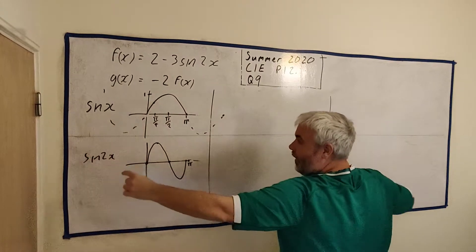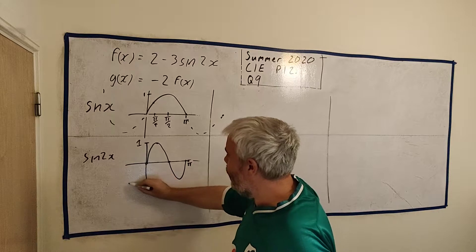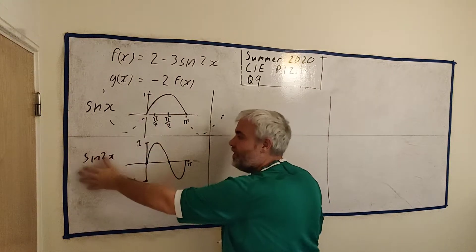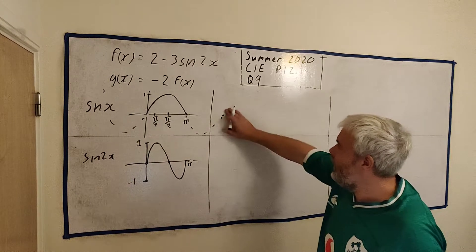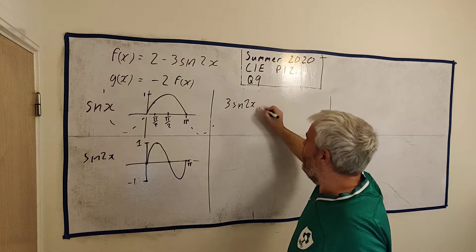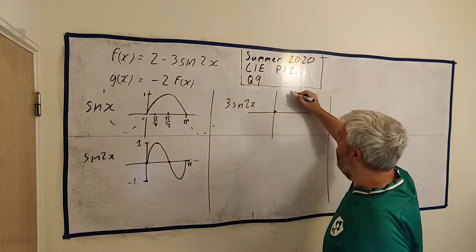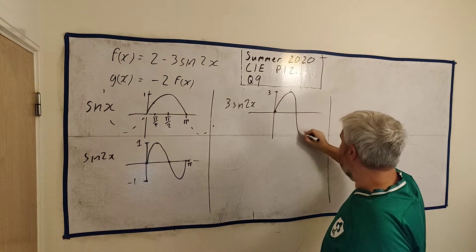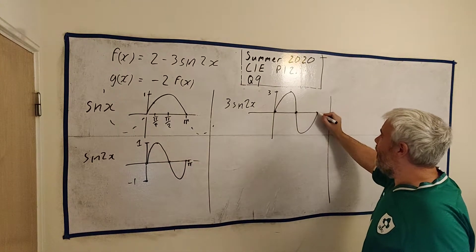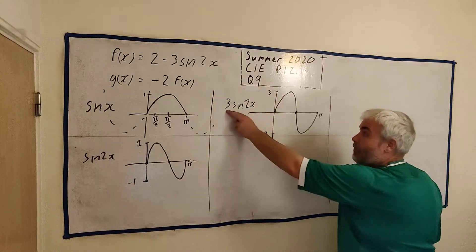Multiplying by a number inside the sine squashes or pulls the graph depending on whether the number is bigger or less than 1. Now let's look at 3sin(2x). If I multiply 0 by 3 I get 0. If I multiply 1 by 3 I get 3, so the peak is now at 3. Going through every step, we get the same shape but now it goes between minus 3 and 3 instead of minus 1 and 1. Multiplying outside by 3 stretches the graph vertically — that's the amplitude.